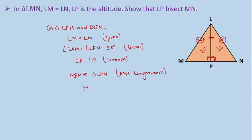So, we can say that MP is equals to NP by CPCT. Therefore, we can write LP bisects MN.